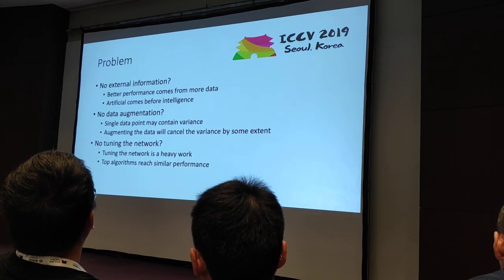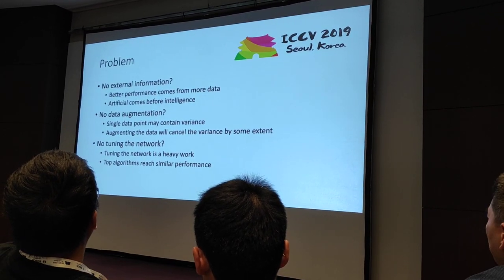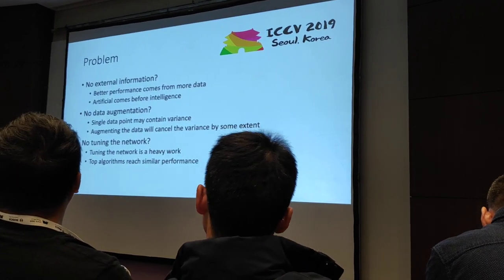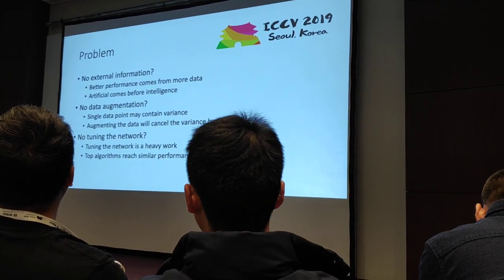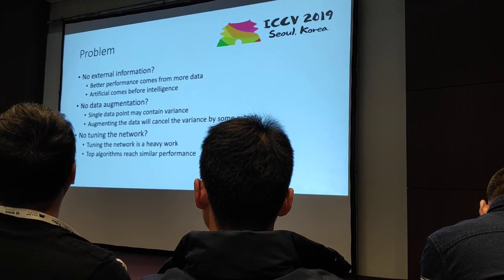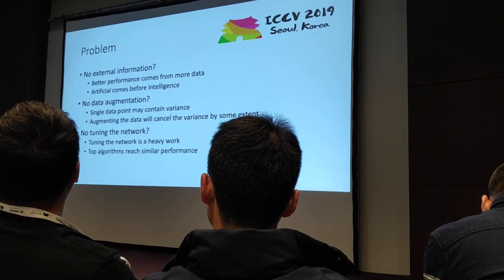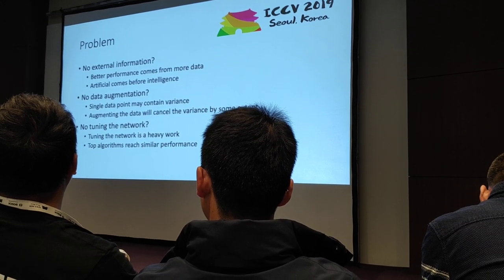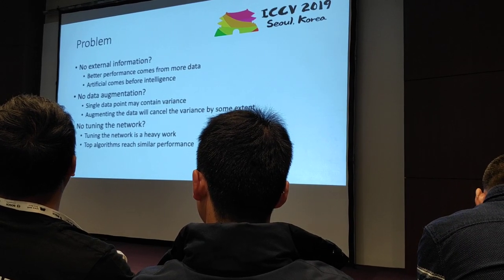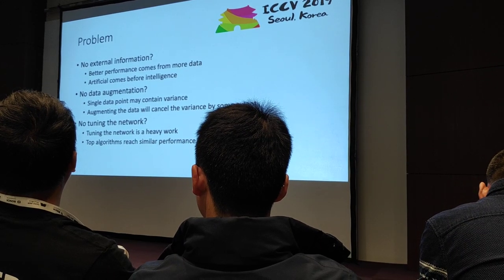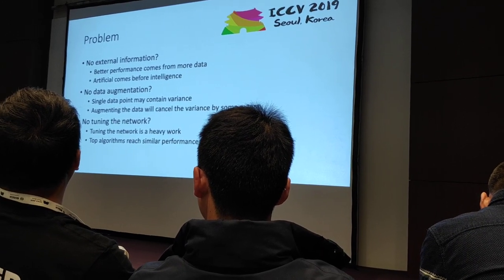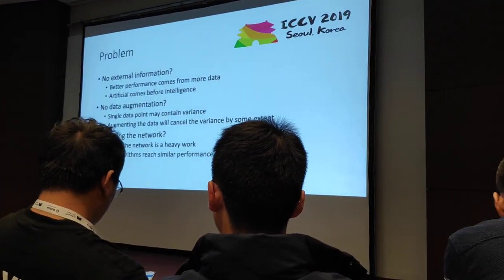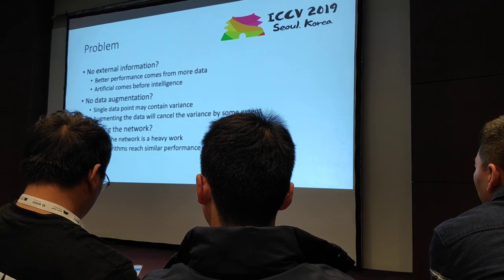The third one is that we don't want to tune the network — that's why we have a special solution. We don't tune the network, we don't try different architectures, we don't try different loss functions, and we don't tune the parameters of the larger margin softmax functions. As you noticed, the top-performing algorithms reached a very similar performance — the difference is only 1% or even less. But now we are trying to propose a method that is an offline recognition algorithm, not an online algorithm.